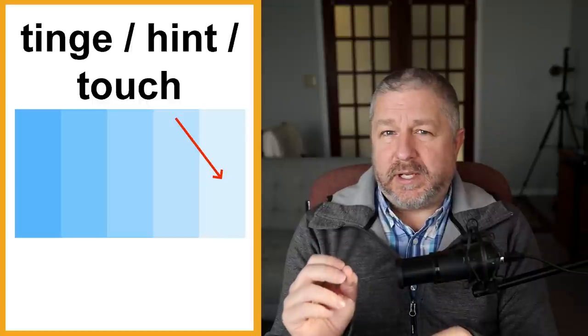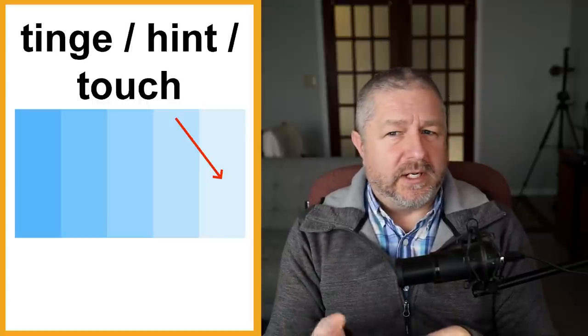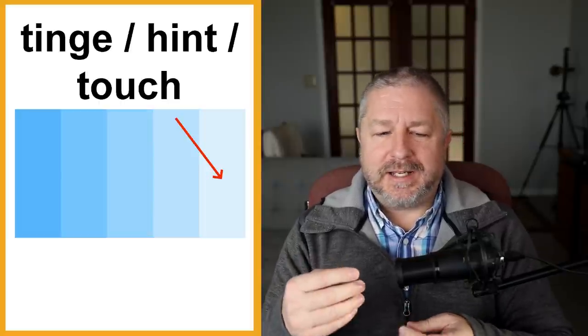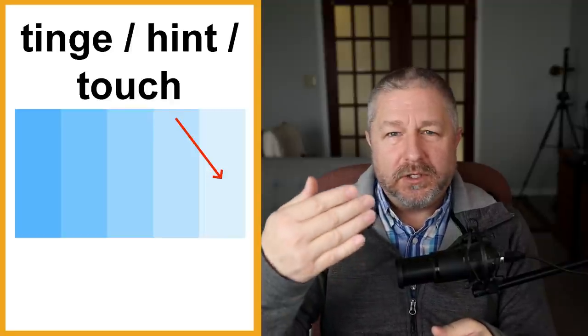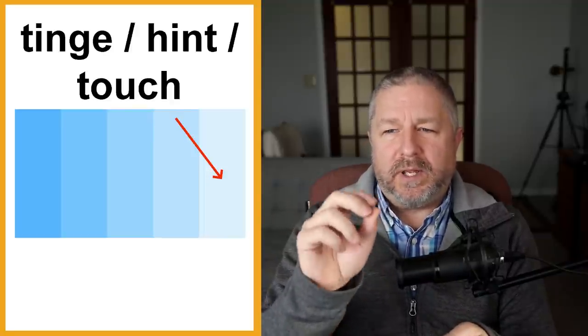We also have words like tinge, hint, or touch. Someone might paint a wall white but it might have a tinge of blue in it, a hint of blue, or a touch of blue. For example, if you wash a white T-shirt with a brand new pair of blue jeans, it might end up with a tinge of blue because the dye from the jeans went into the T-shirt. These words describe when you can see just a little bit of another color in something.